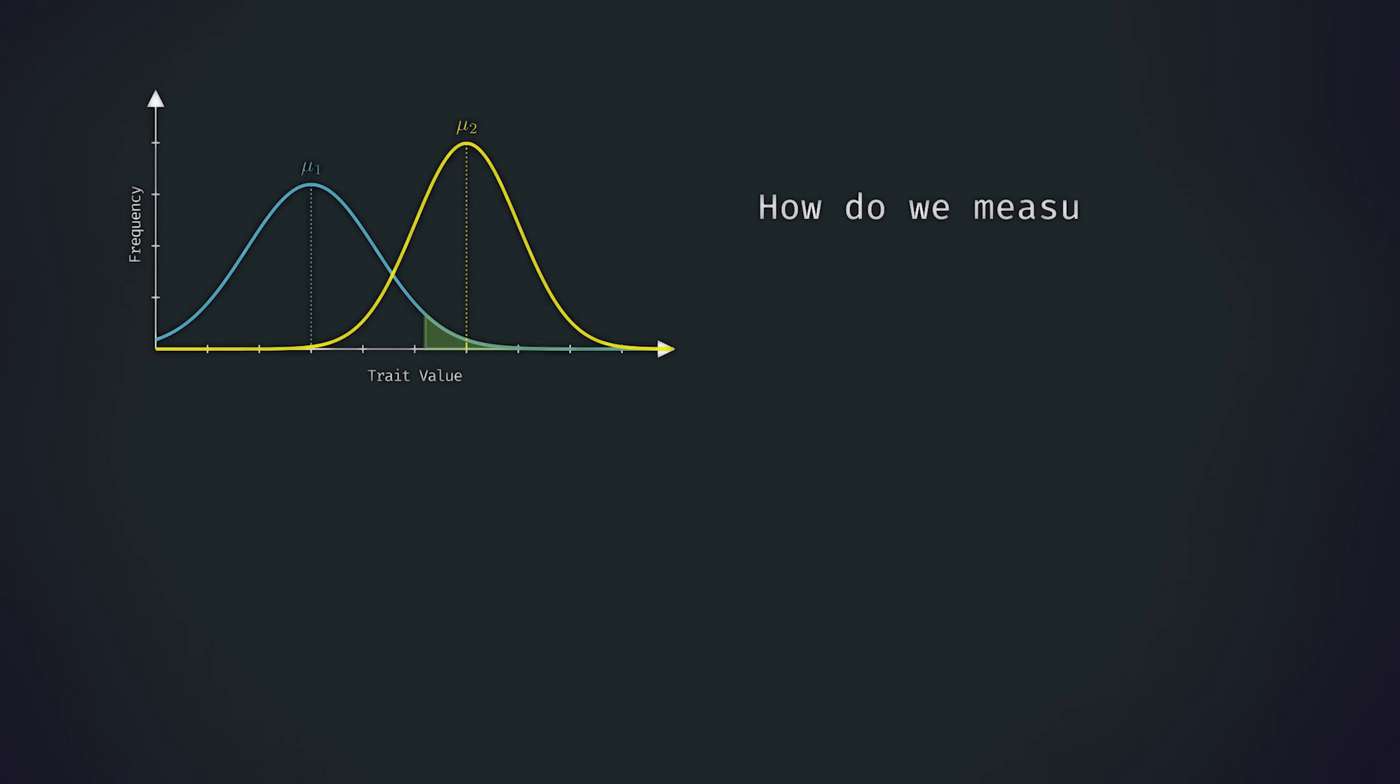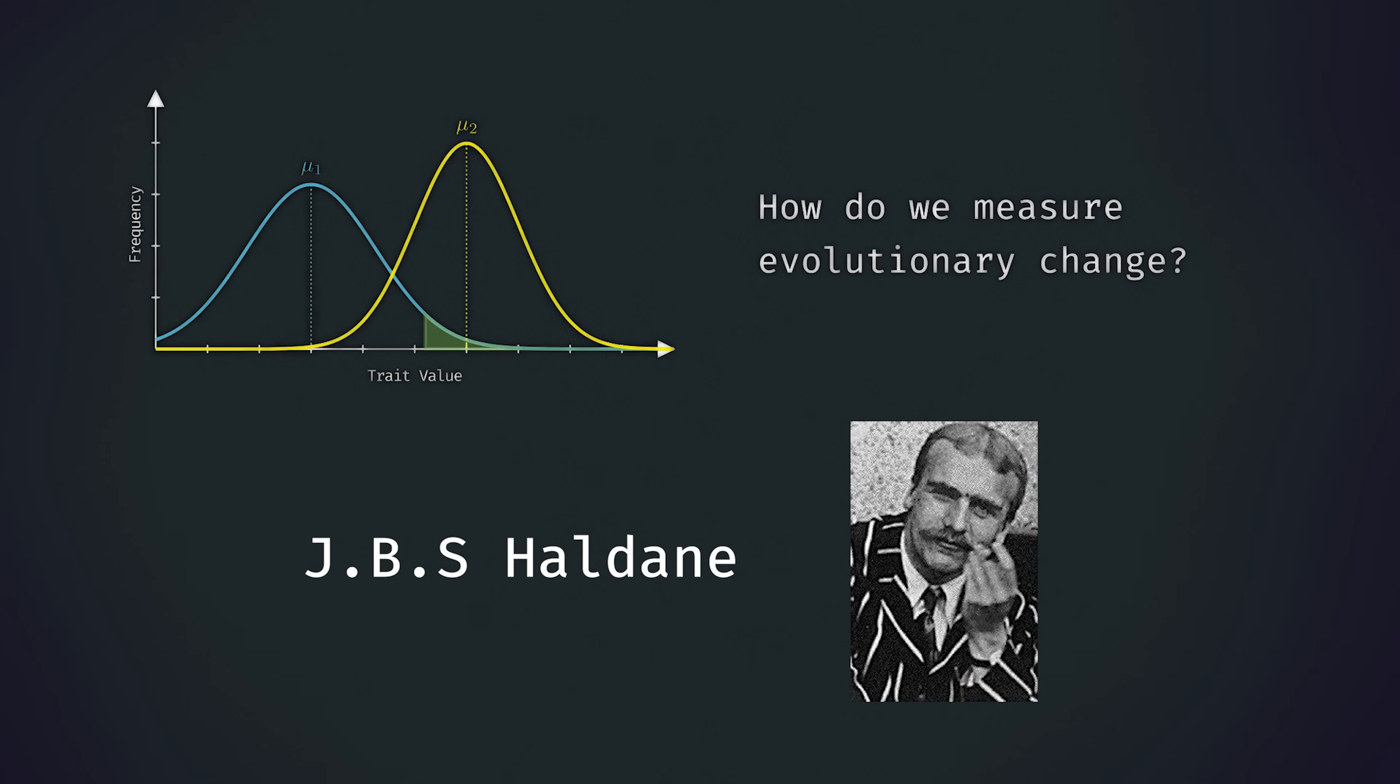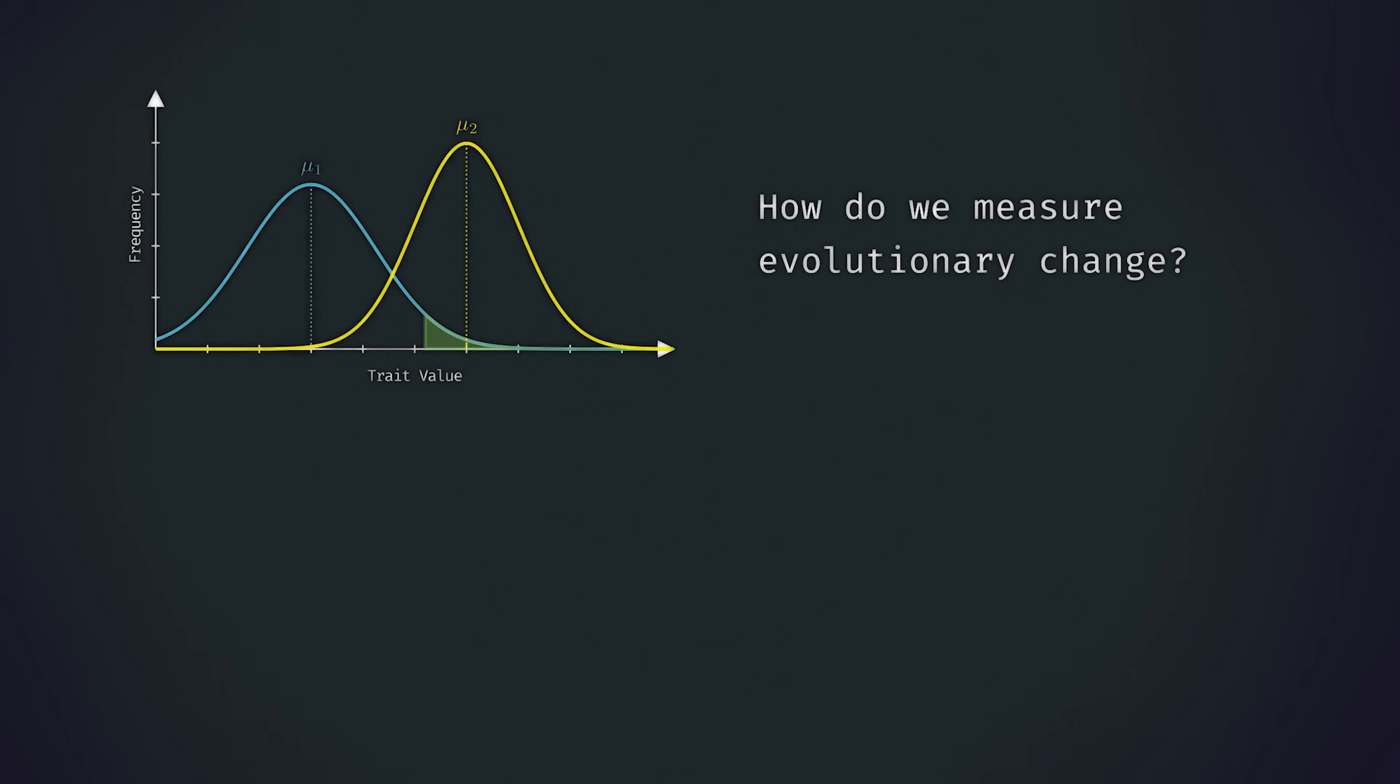This question famously goes back to the evolutionary biologist J.B.S. Haldane, who is considered to be one of the founding scientists of our modern statistical conception of evolution by natural selection, and an all-round fascinating character. As such, there's an important measure of the rate of evolutionary change named after Haldane, despite this unit actually having been defined later by another biologist called Philip Gingrich.